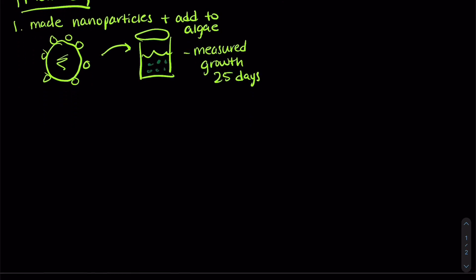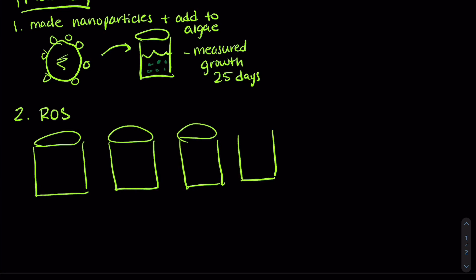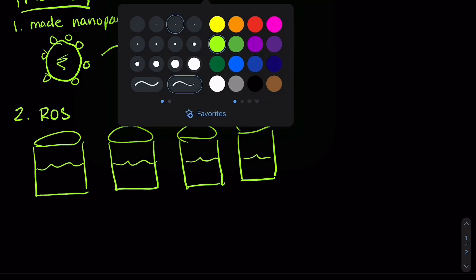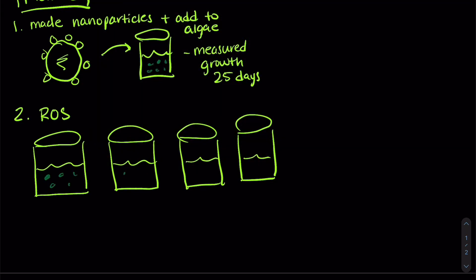The second thing they did was a pretty cool experiment where they actually introduced these nanoparticles and then measured these reactive oxygen species to see if the nanoparticles with the chemicals actually worked. So they set up an experiment that had four treatments. All of these have algae in them. And in two of them, they added the nanoparticles or they added algae that had nanoparticles in them. And then in the other two, there were no nanoparticles. So these were our control beakers.